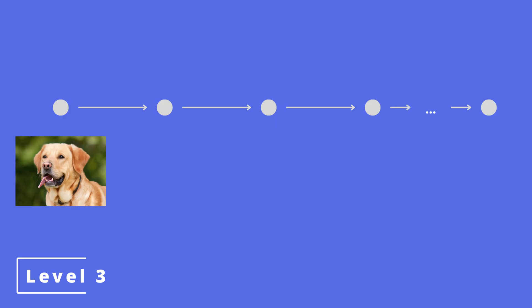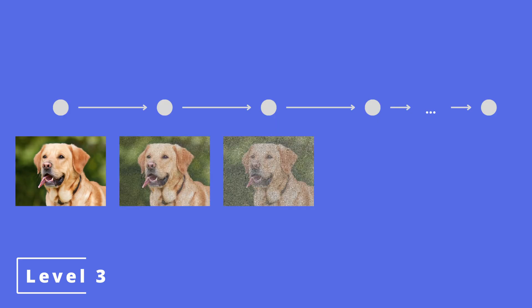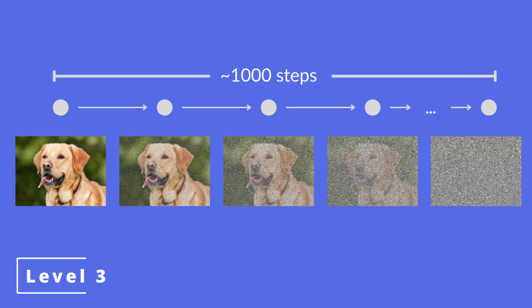This is an example where the image only has two pixels, but of course that does not really reflect reality. Normally images have many more pixels, and when that happens this graph will have many more dimensions. Diffusion models add noise to the image in this way until it becomes nothing but noise, done by adding just a little bit of noise for hundreds or even thousands of times, resulting in a hundreds or thousands step long Markov chain.